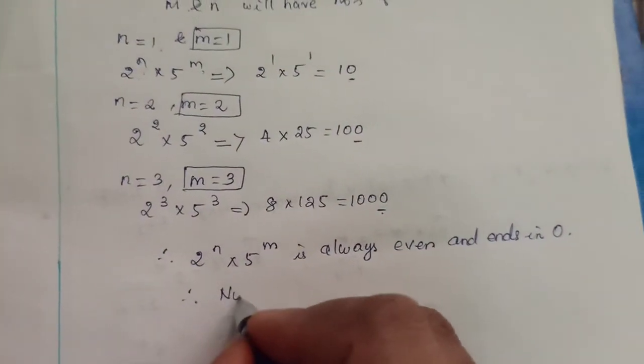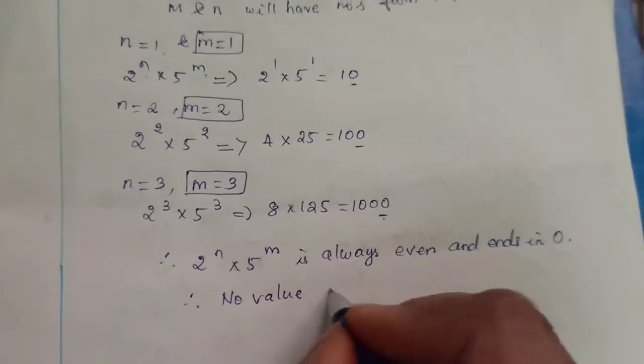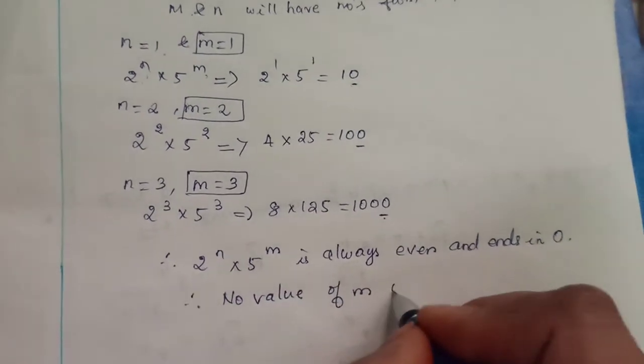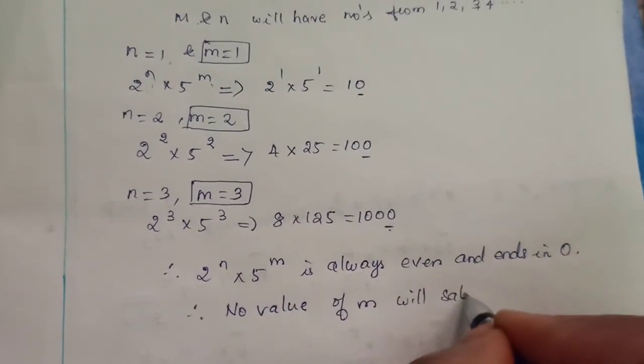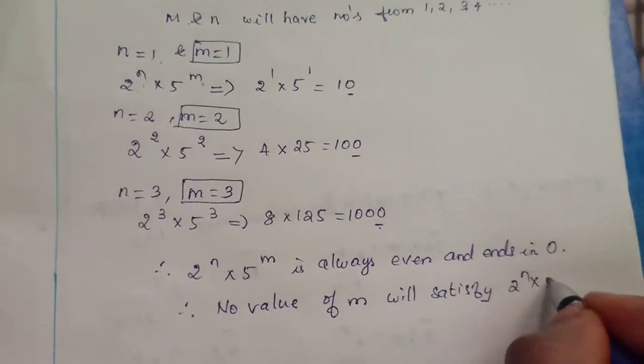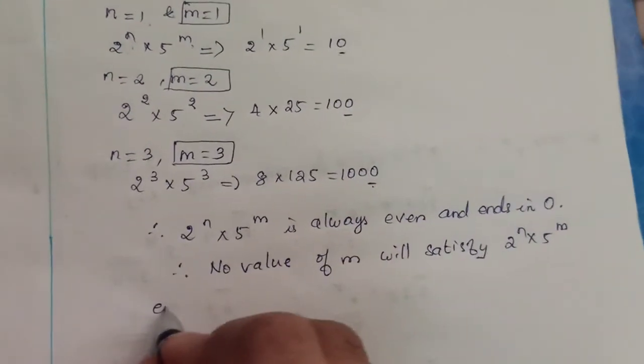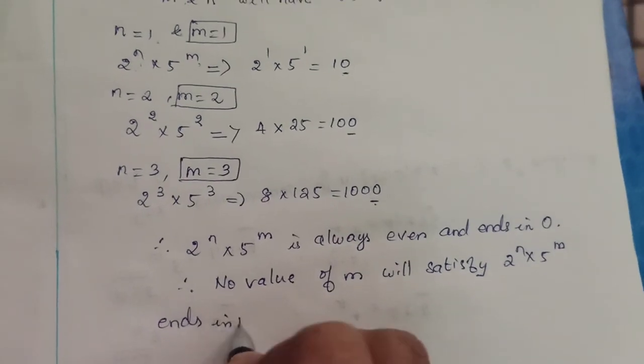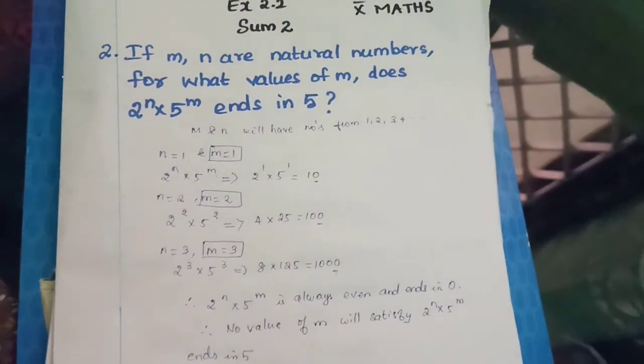Therefore, no value of m will satisfy. Will satisfy 2 power n into 5 power m ends in 5.